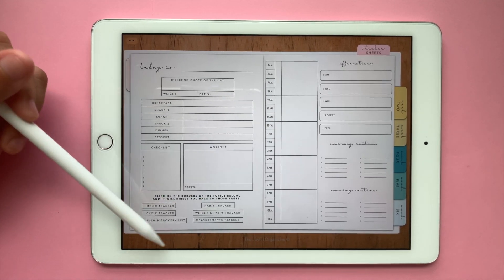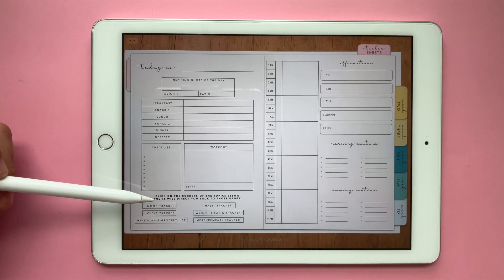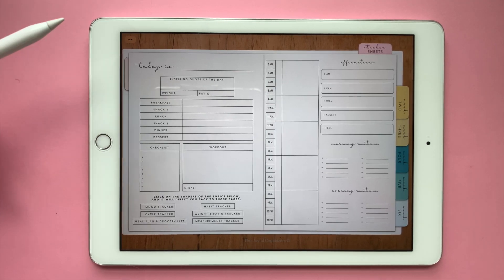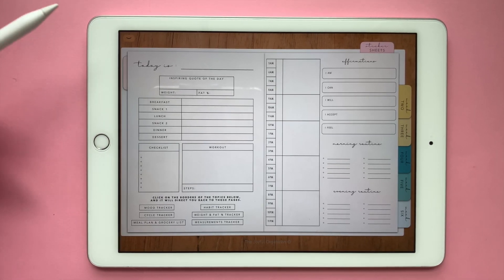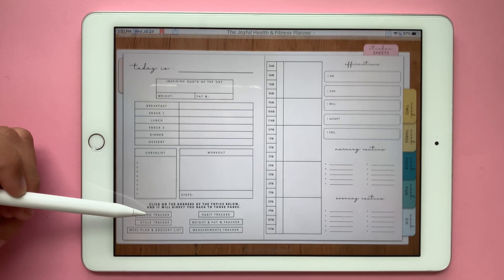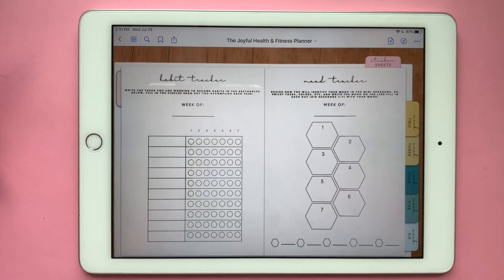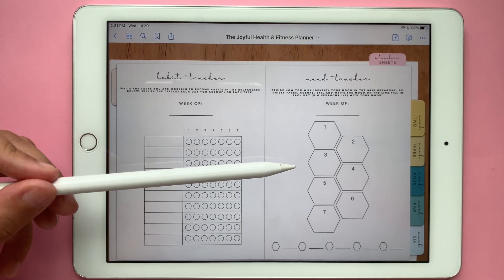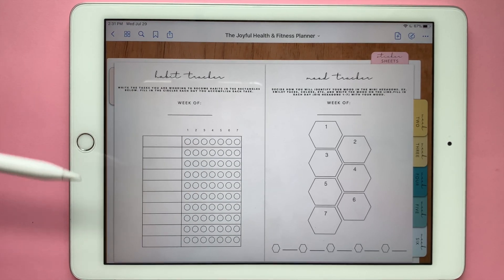And my favorite part is this bottom part. Here you have hyperlinks to the trackers that we saw previously. So if you want to track your daily mood, you would just click on mood tracker and it brings you back to the mood tracker for that week.